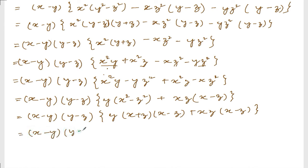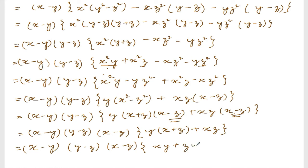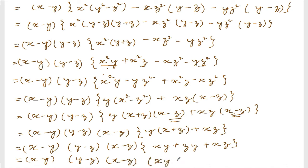So x minus y, y minus z, and from these two terms I can take x minus z common. So: x minus y, y minus z, x minus z, and inside: y(x + z) + xz. That simplifies to xy + yz + zx. So the final answer is (x minus y)(y minus z)(x minus z)(xy + yz + zx). Thank you so much, we will meet in the next video.